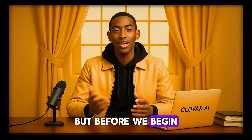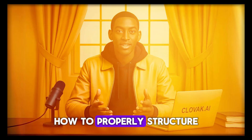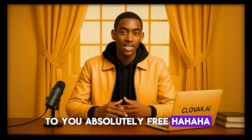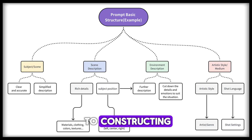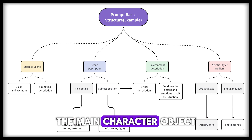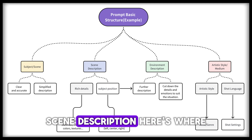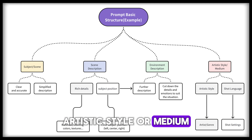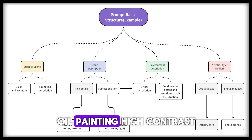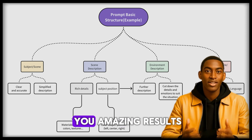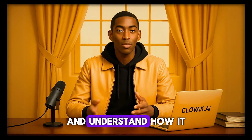Before we begin creating our own, I want to share something most people don't show you in their tutorials: how to properly structure your prompts. This is one of the secrets to getting consistently high-quality results from any AI tool. Look over here — this is where you'll find the prompt basics section, your guide to constructing powerful and effective video prompts. The structure is broken down into four key components. Subject or scene: what your video is about — the main character, object, or central visual theme. Scene description: where you add detailed actions, emotional tones, or specific character positions. Environment description: focusing on the setting, time of day, weather, background elements, and spatial layout. Artistic style or medium: defining the visual tone — is it anime, cinematic, oil painting, high contrast, or soft lighting? Each section is broken down further with examples and subcategories, giving you a clear blueprint for writing rich, detailed prompts that get you amazing results.